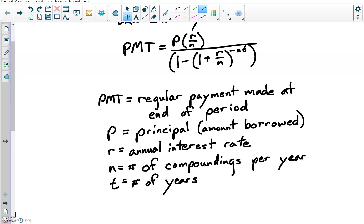So the P itself is the principal, just the amount borrowed. R is the annual interest rate given as a percentage but you will convert it to decimal to make the formula work. N is the number of compoundings per year and then T is the number of years.